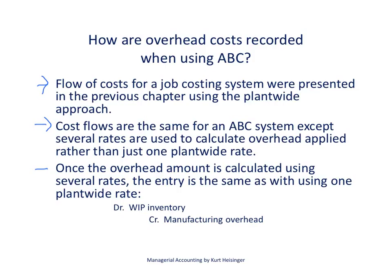This last bullet point is a quick review of the entry we make when we apply overhead costs to products, whatever system we're using. Once the overhead dollar amount is calculated — whether using a plant-wide, departmental, or activity-based costing approach — we debit Work in Process Inventory, which is an asset account going up, and we credit the Manufacturing Overhead account. That entry is consistent regardless of the allocation method we use.